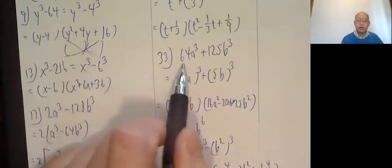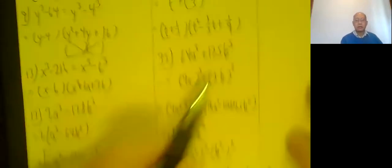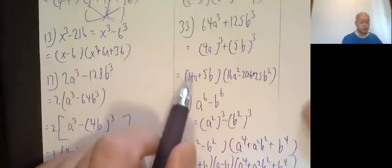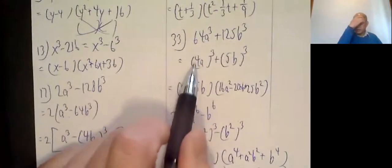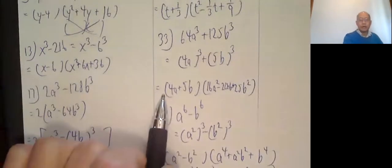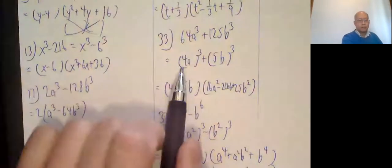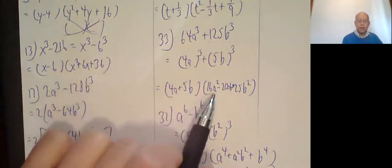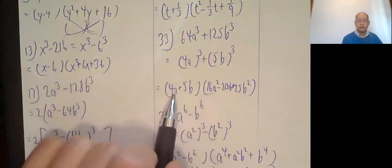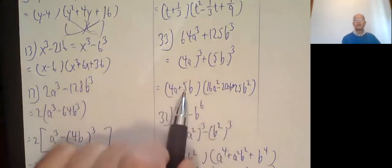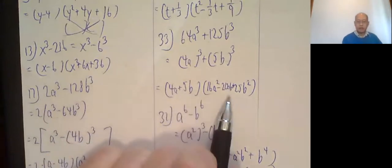33. 64a cubed plus 125b cubed. And you want to write it as the sum of cubes. Something cubed plus something else cubed. This thing is 4a cubed. This is 5b cubed. Load it in the formula. 4a plus 5b. 4a squared, 16a squared, minus the product of these two. 4a times 5b is 20ab. Plus 5b squared, which is 25b squared.